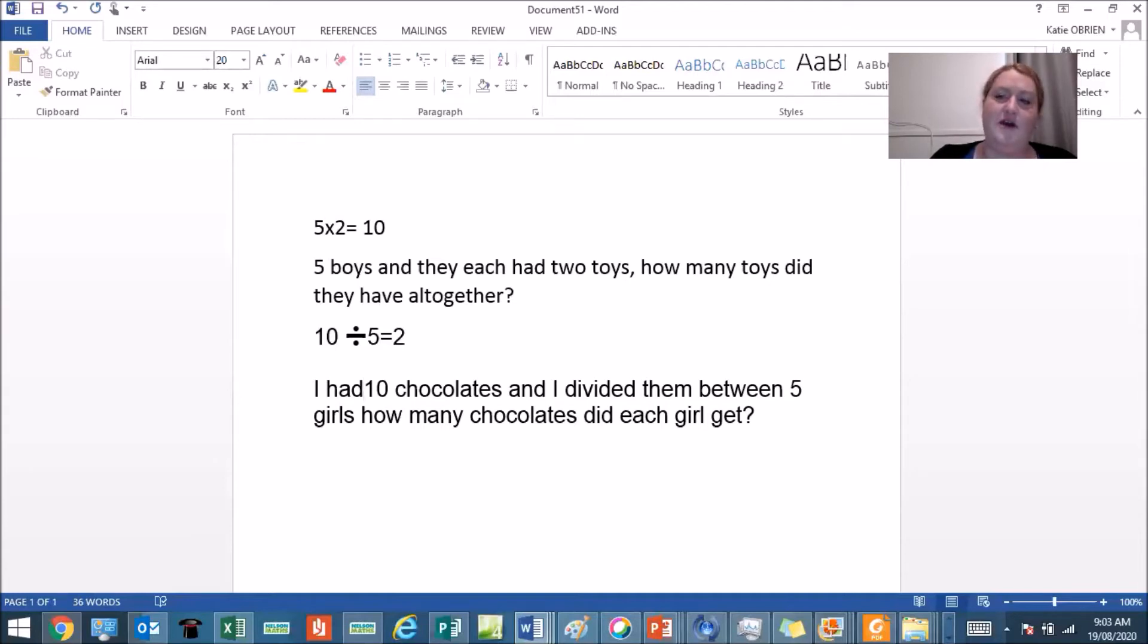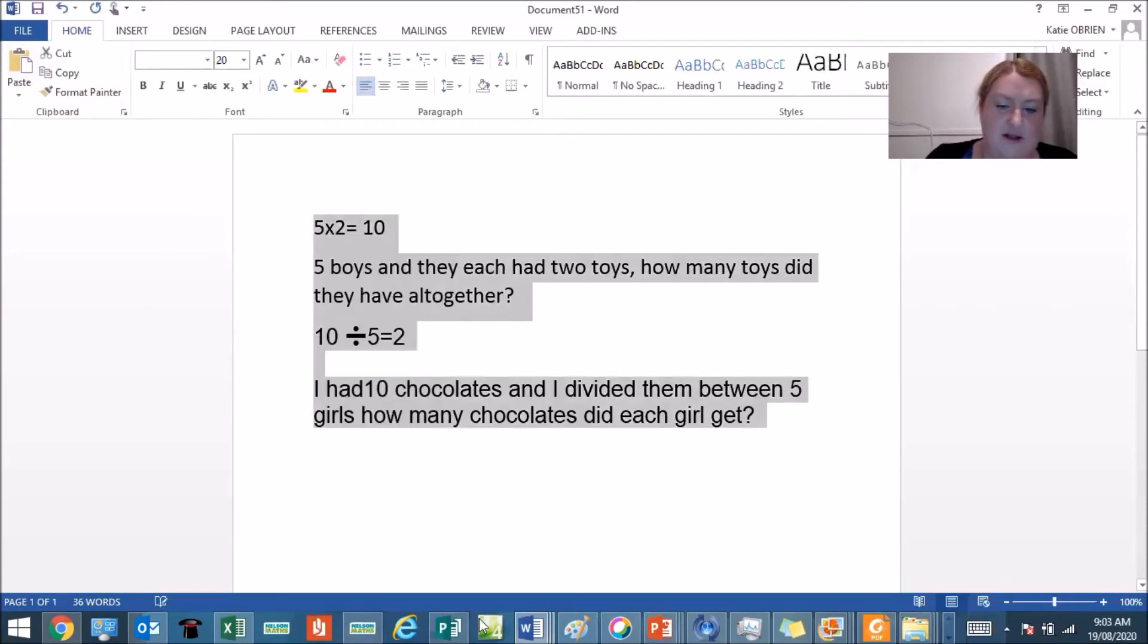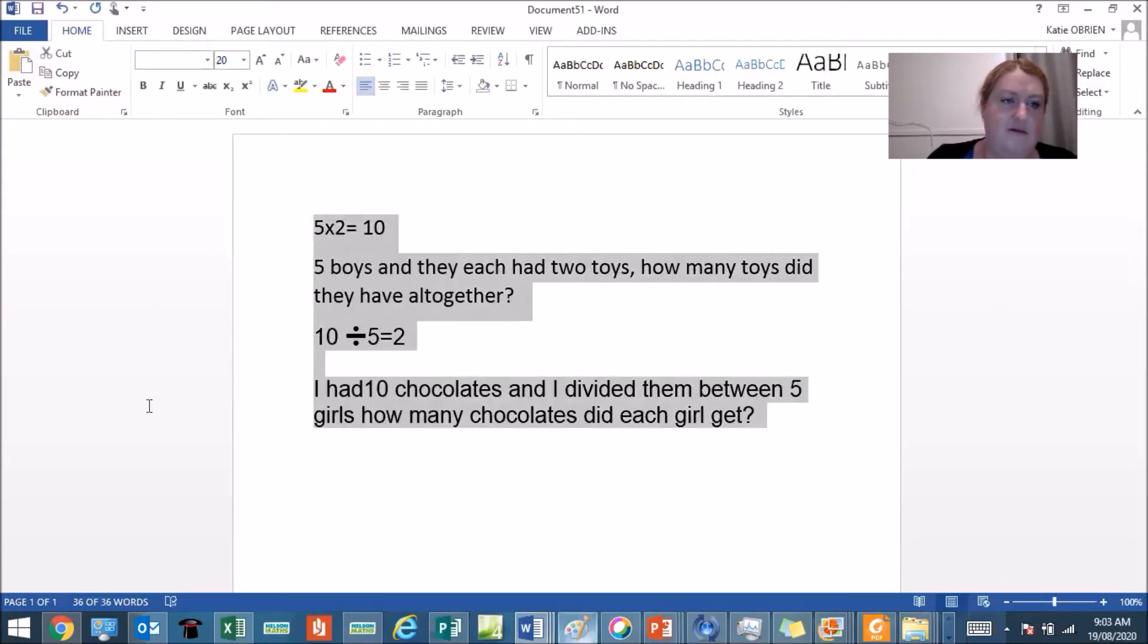So here I've got my two number problems now that I've created from my number sentences. And what I could do if I want, I could draw a picture of each of those too. Now if I want I can take it into Word by copying it and taking it across. And I've got them down here. So I might just get rid of that one.